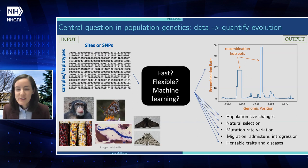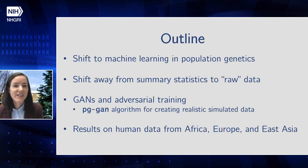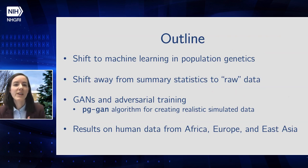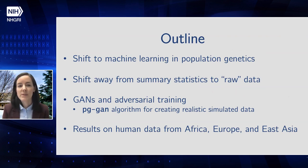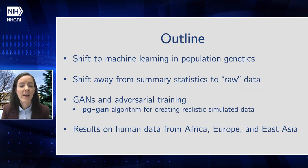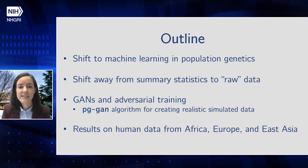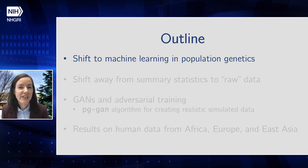I think there have been several shifts in population genetics recently. One was toward machine learning around the 2010 timeframe, and then a second shift away from summary statistics toward trying to use raw data. I'll also talk about one of my ongoing projects in my lab about using generative adversarial networks and adversarial training more generally to create simulated data.